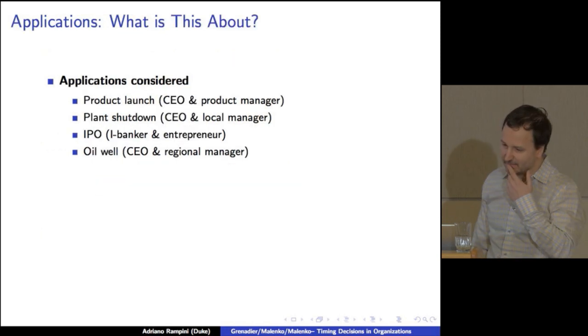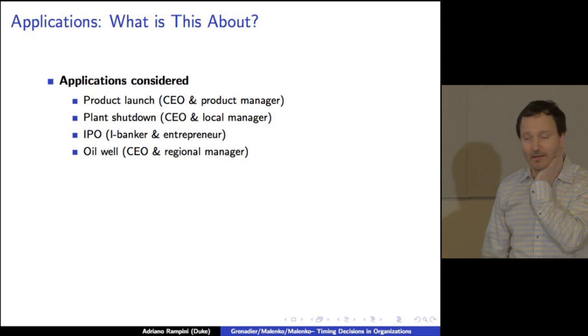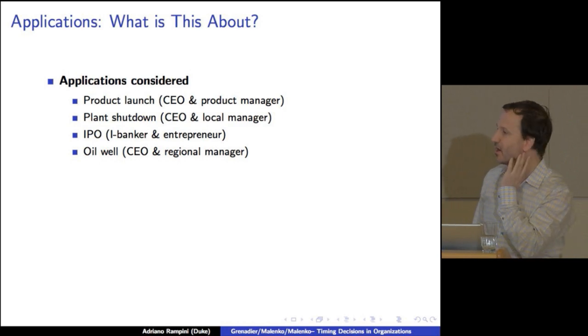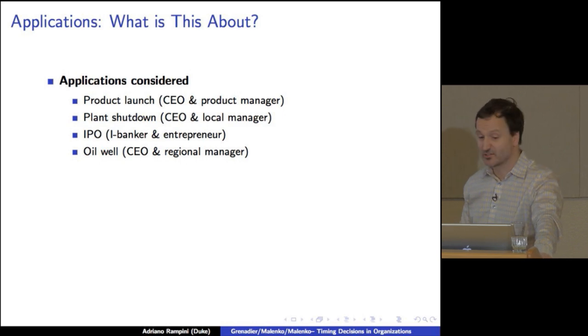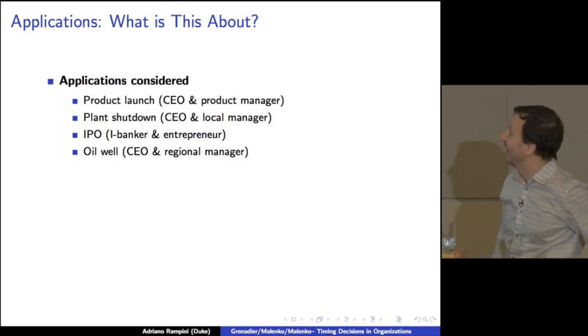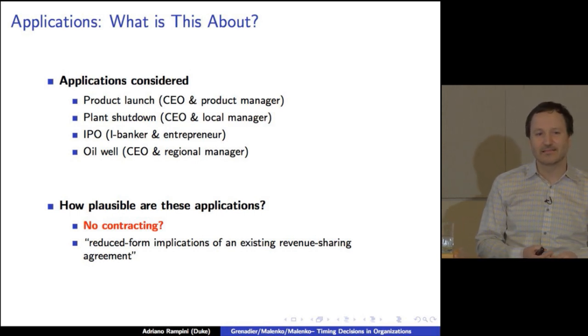All right. So the last thing is the questions of applications. So in some sense, what is this paper really about? The applications that are being considered in the paper, briefly, is a product launch as a CEO and a product manager, the product manager being the expert, or plant shutdown, CEO and the local manager, IPO, an iBanker and an entrepreneur, or drilling an oil well, a CEO and a regional manager. Now, what I felt like is, how plausible are these applications?